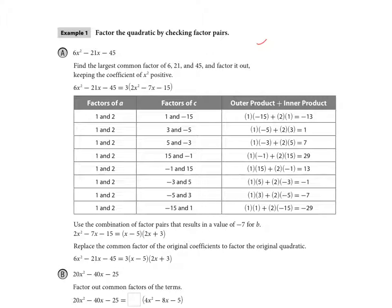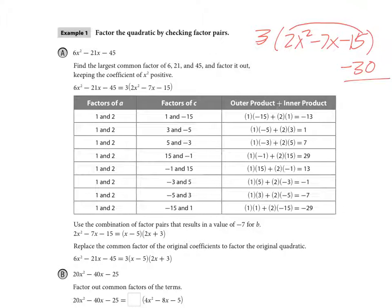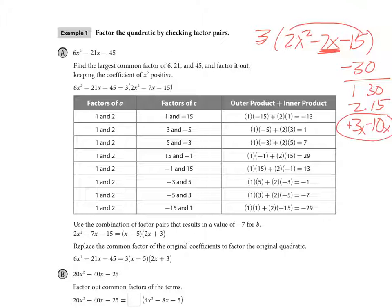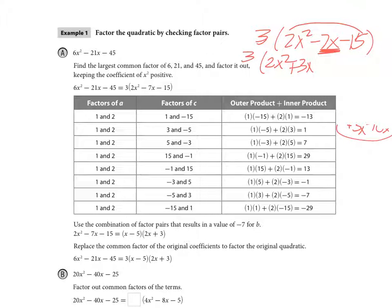Now let me show you a method that works all the time. With the 3 factored out, I have 2x² − 7x − 15. Multiply your 'a' times 'c': 2 times negative 15 is negative 30. List the factors of negative 30: 1 and 30, 2 and 15, 3 and 10. Stop at 3 and 10 because those give me negative 7 — the 10 is negative and the 3 is positive. Replace negative 7x with these two terms.